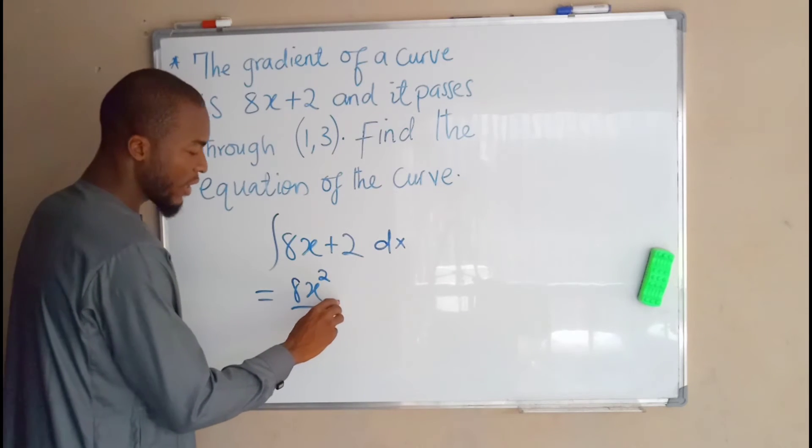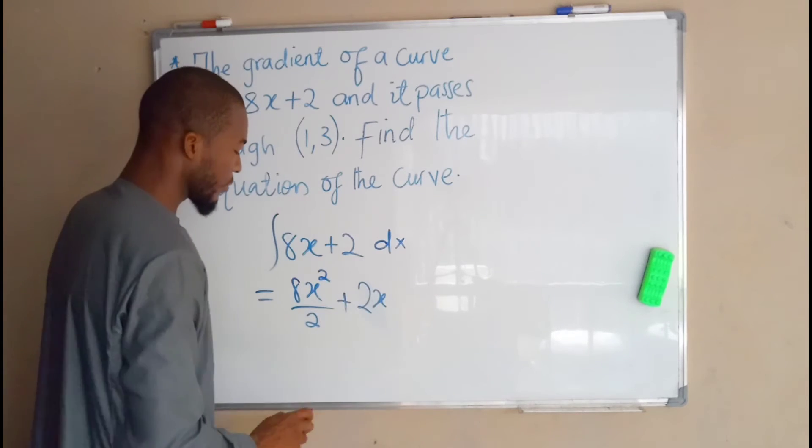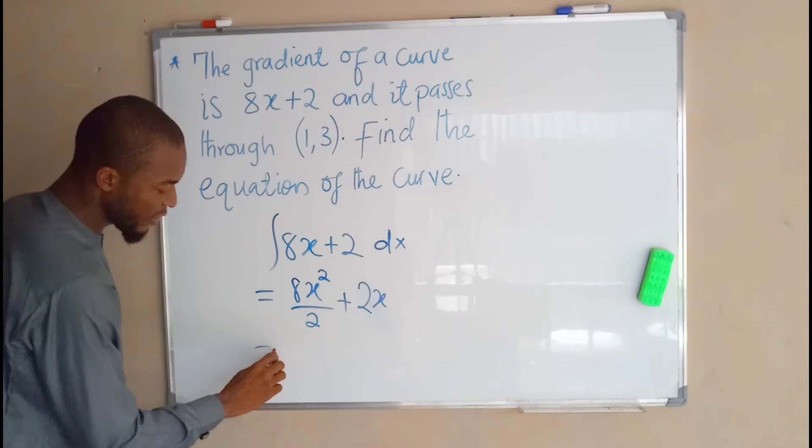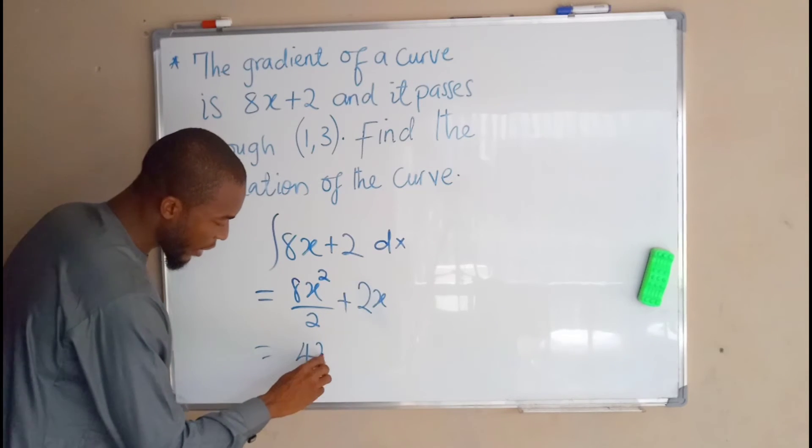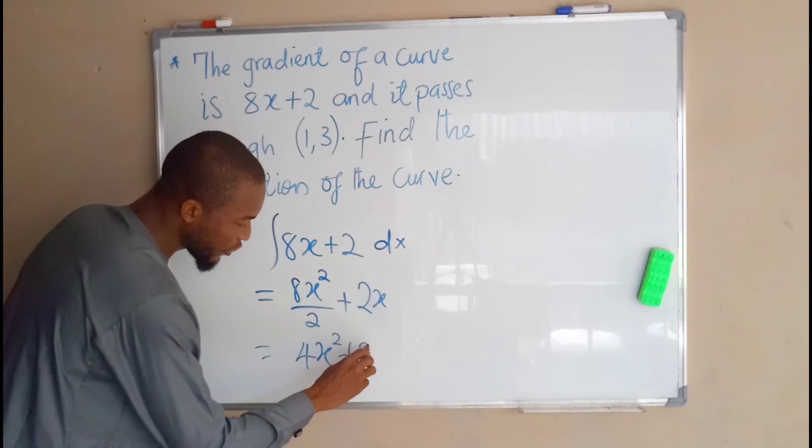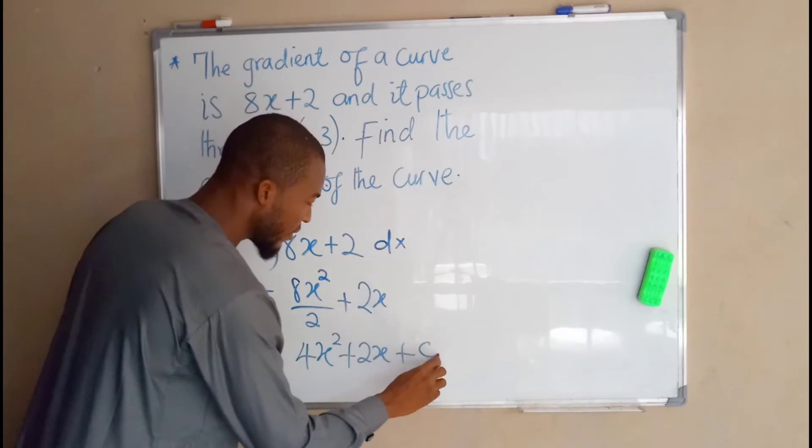Then we'll move to the next one, which is constant. If you integrate constant, you're going to obtain 2x. Simplify this: 8 divided by 2 is 4x squared plus 2x plus the constant of integration c.